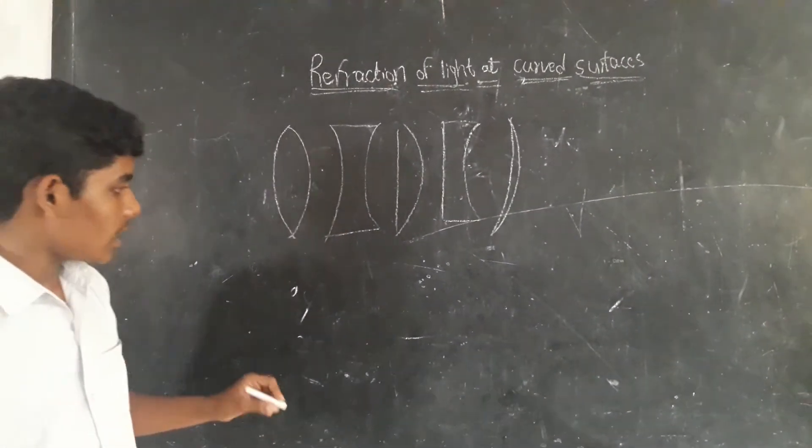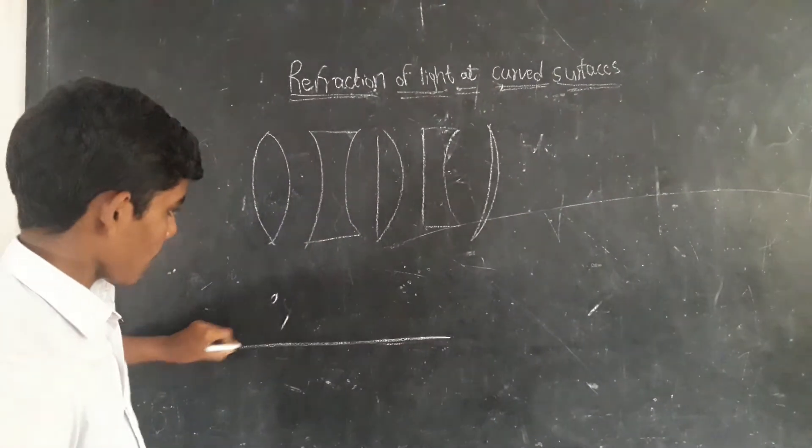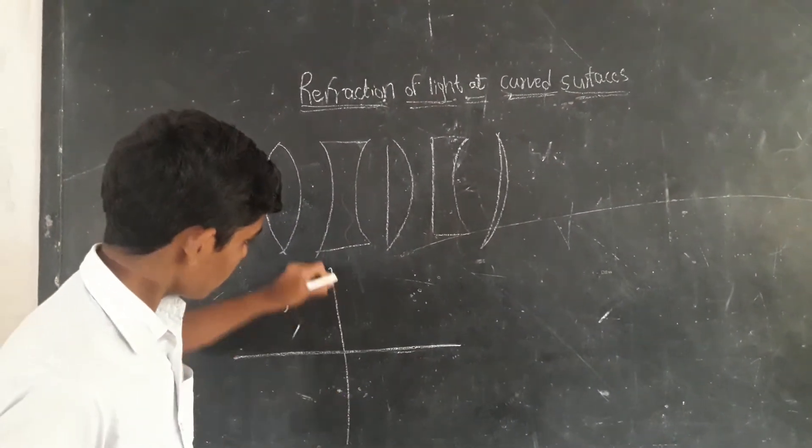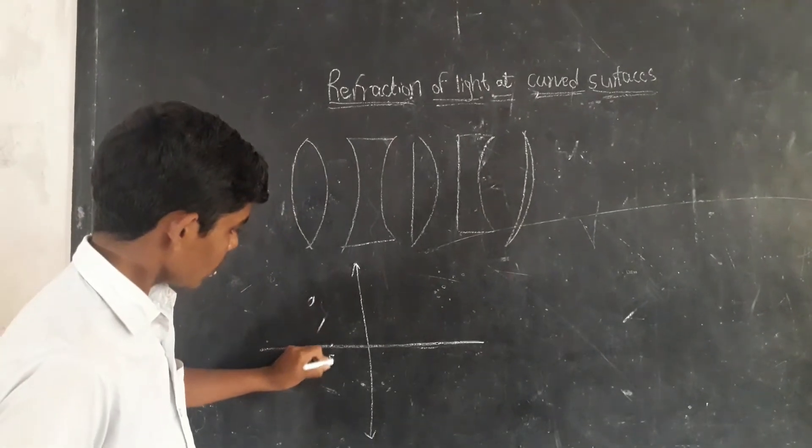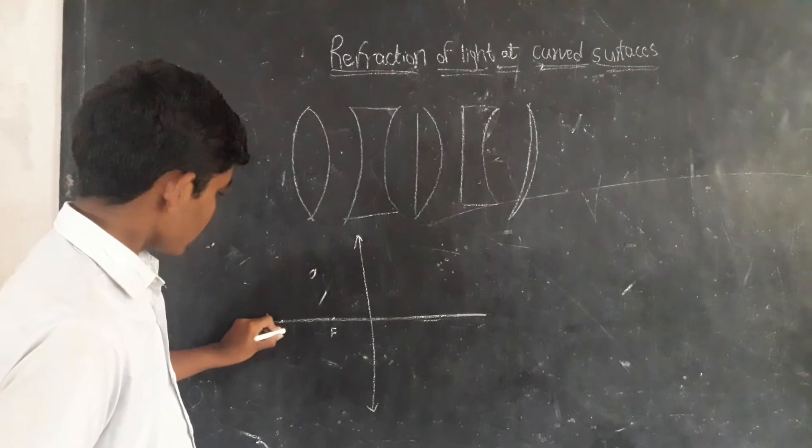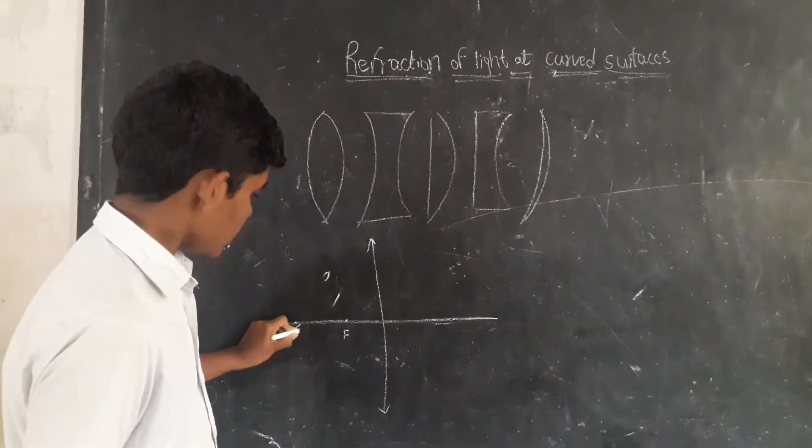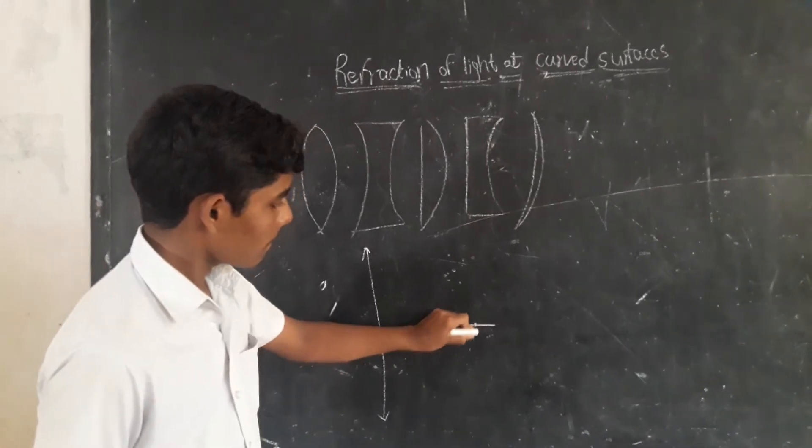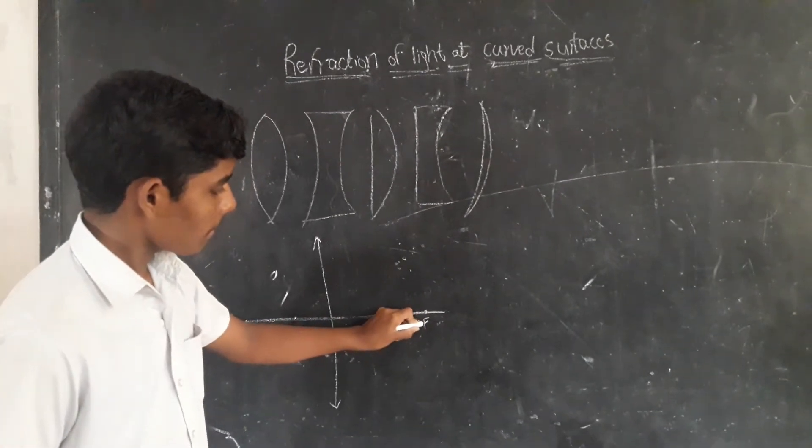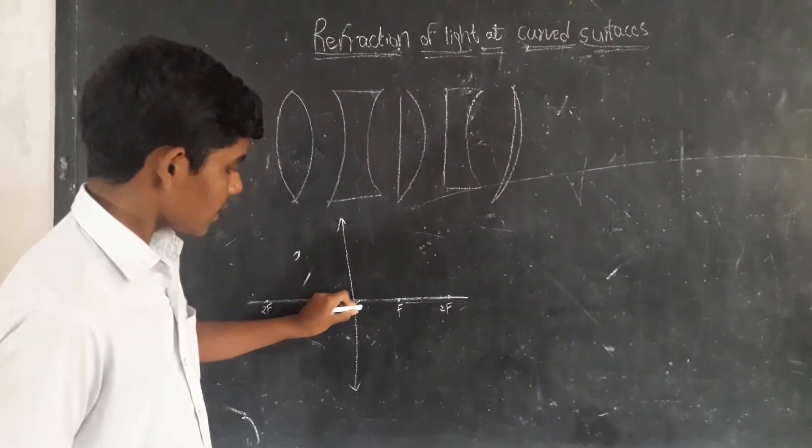This is the diagram showing the focal length and radius of curvature. This is optical center.